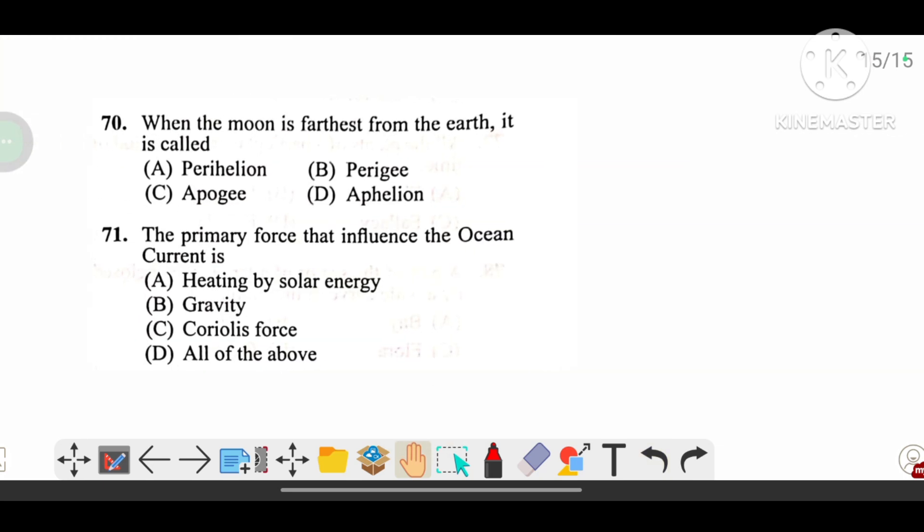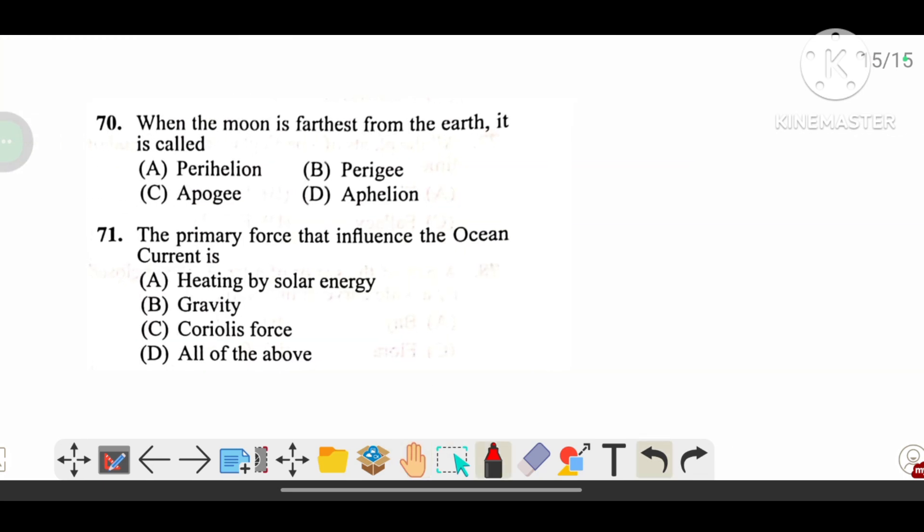When the moon is farthest from the earth it is called apogee, and when it is nearest it is called perigee. When the earth is farthest from the sun it is called aphelion, and when it is nearest we call it perihelion.